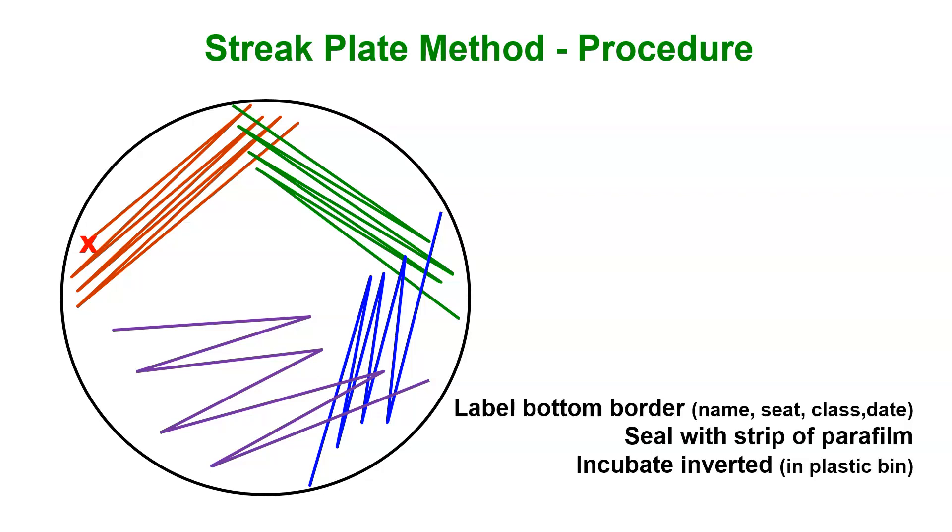You label it. You're going to put your name, your seat, your class, your date. You're going to seal it with a strip of parafilm. You're going to incubate it inverted in the incubator.